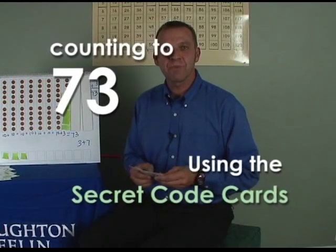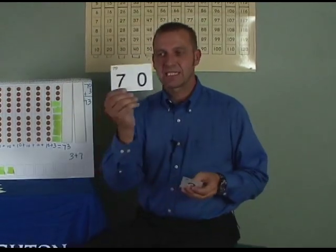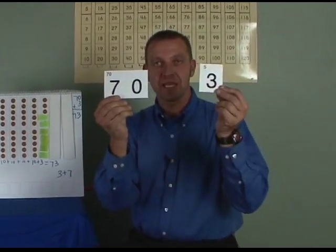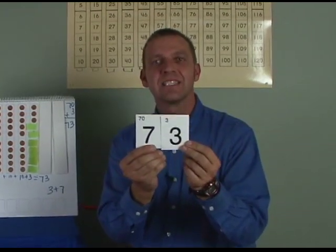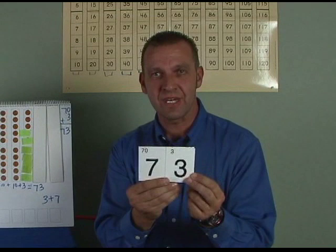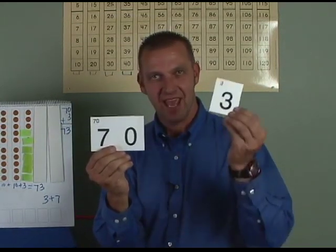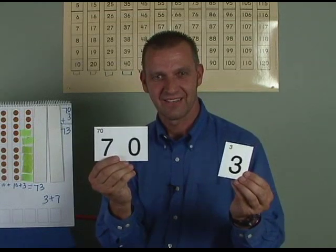The last part of our routine is our secret code card. 70 plus 3 equals 73. I know this is 73 because it is 70 plus 3. Ready? Fabulous job today, boys and girls.